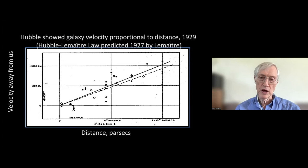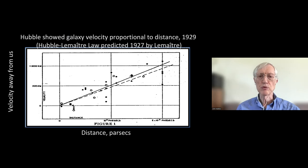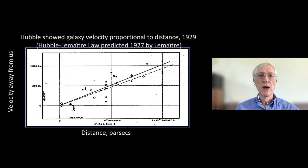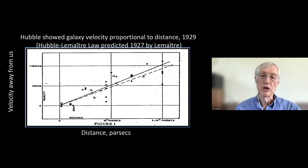The first time we ever knew there was even the possibility of having an age of the universe — previously, people would have guessed it had no age at all, that it was infinite. In 1929, although it must be said this was predicted previously in 1927 by George Lemaître, a Catholic priest from Belgium who also had a doctorate in mathematics from MIT, who used Einstein's equations to predict that this should be true.